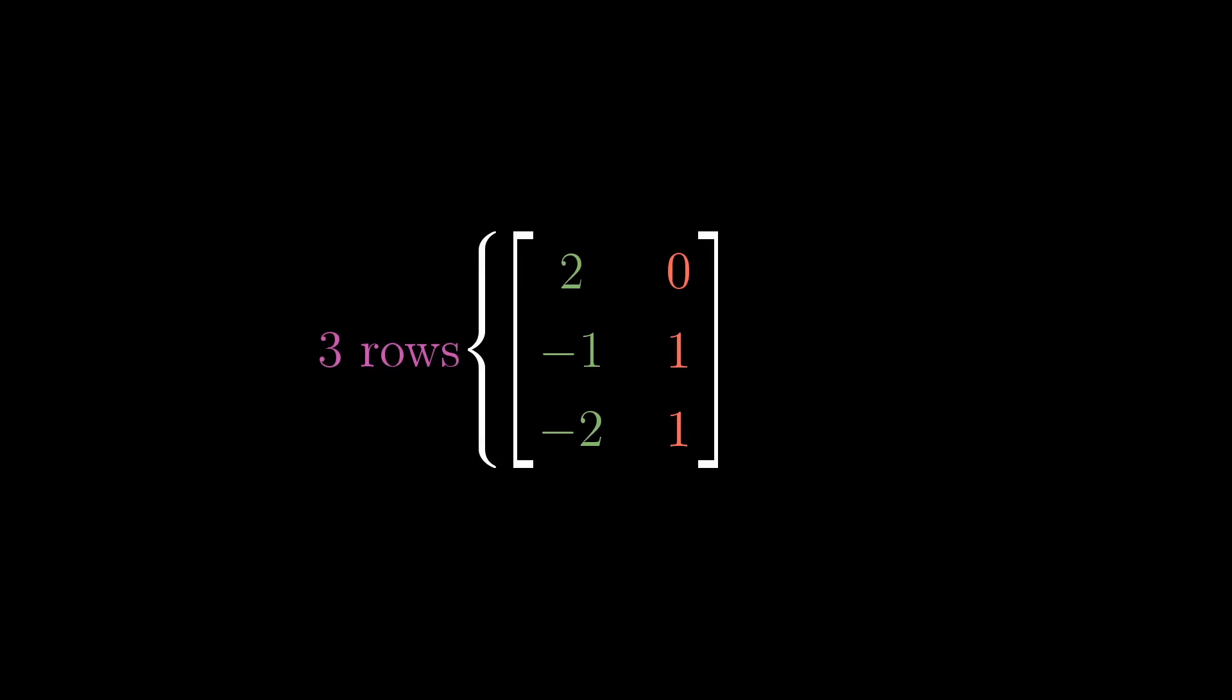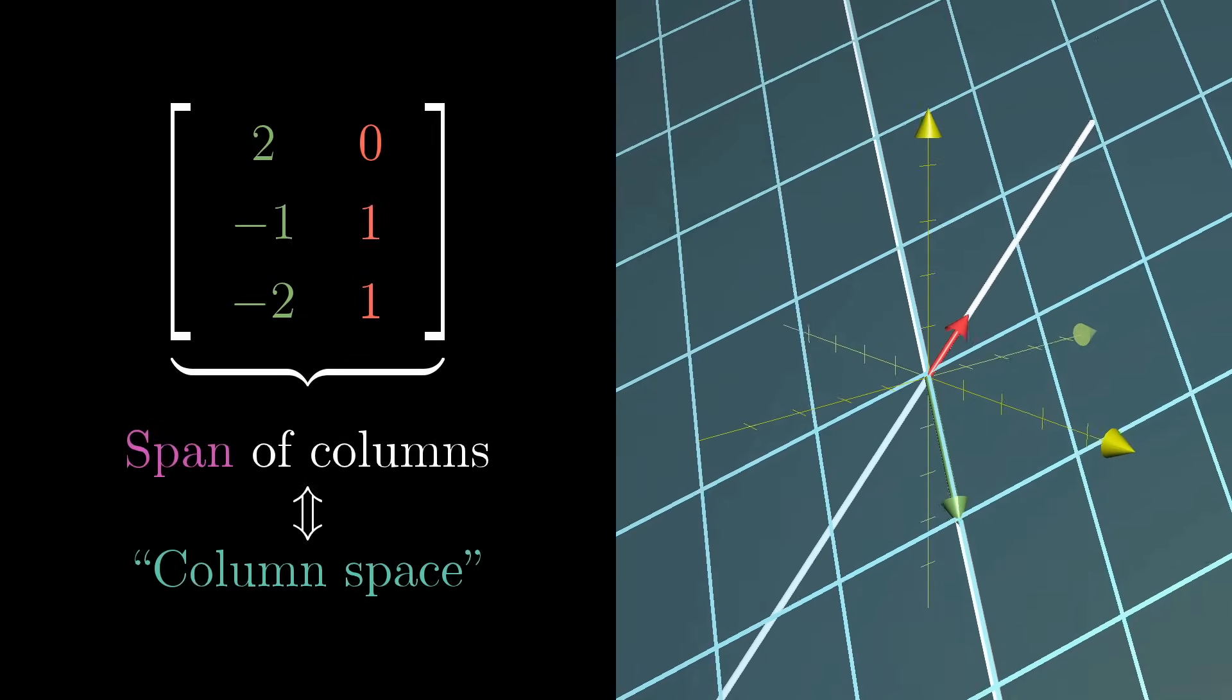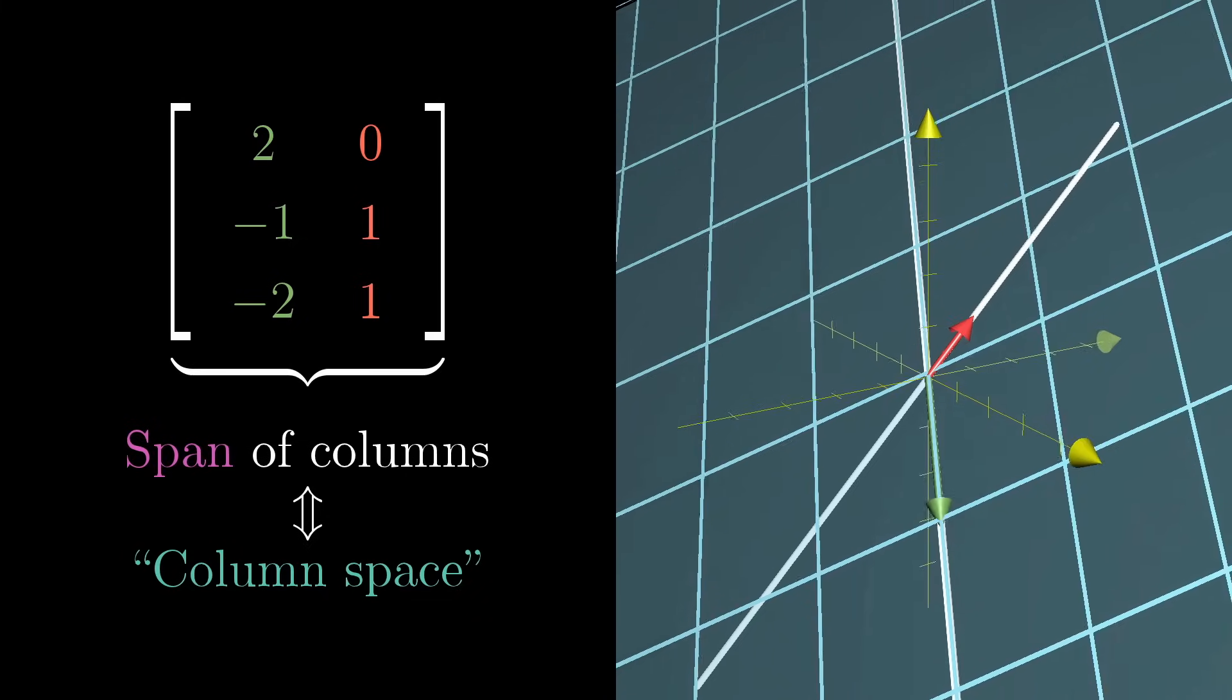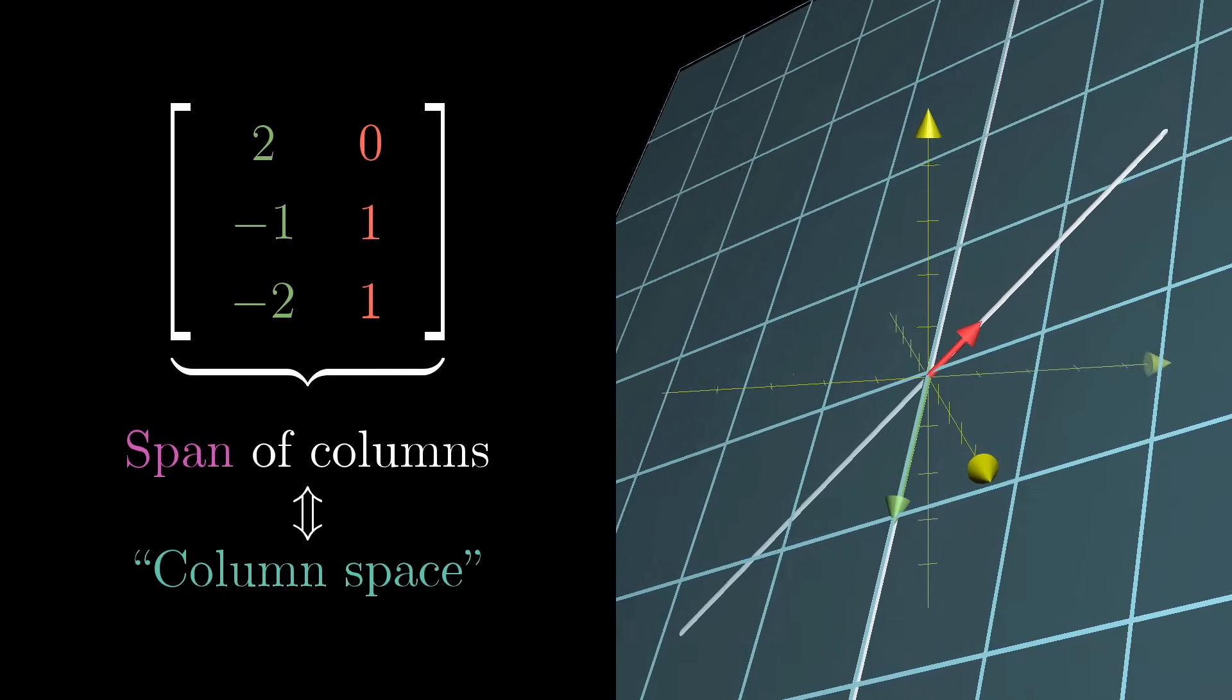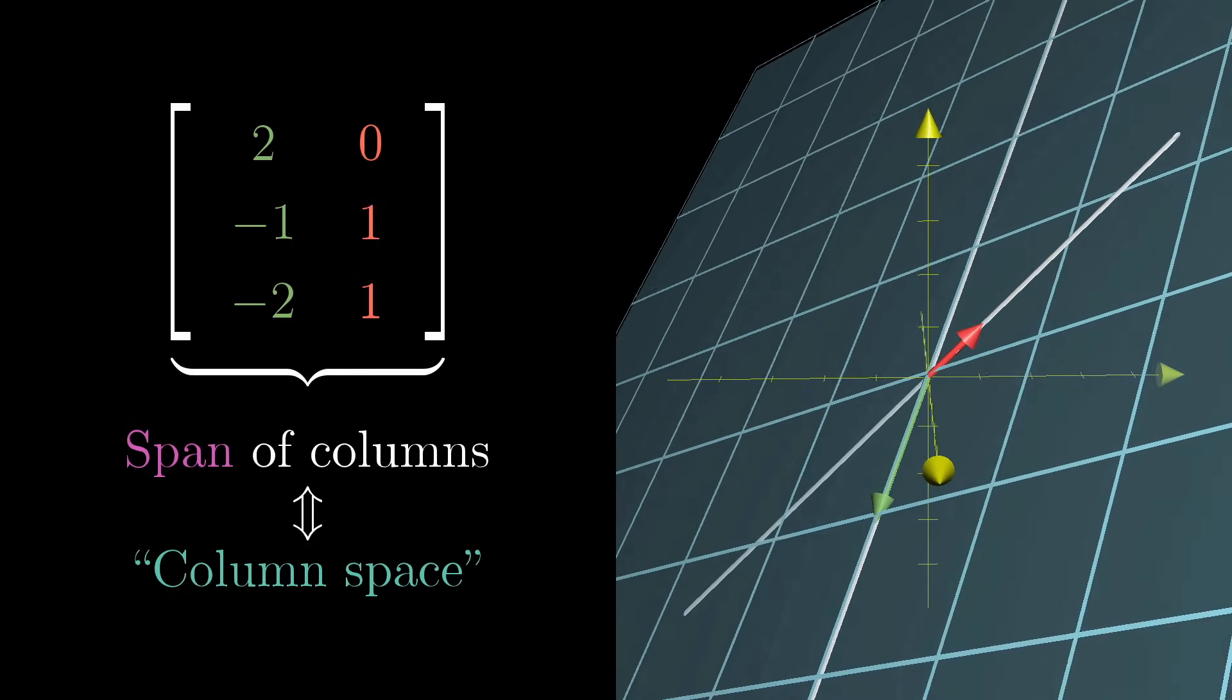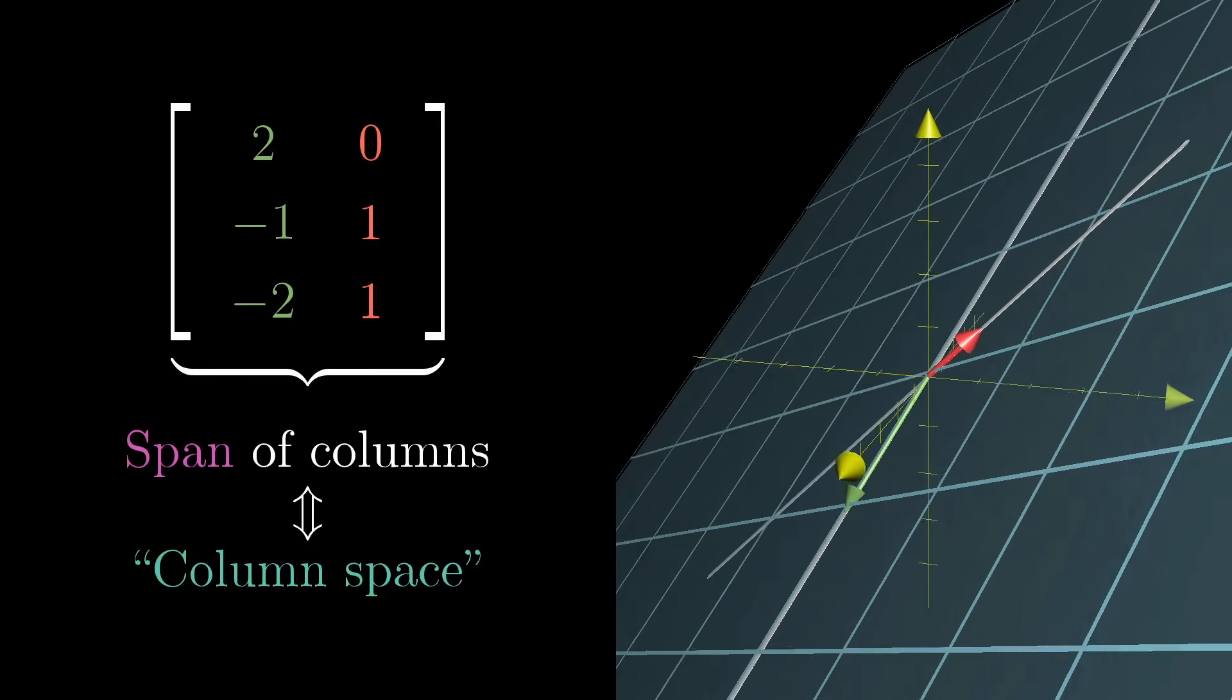this means the matrix encoding our transformation has three rows and two columns, which, to use standard terminology, makes it a 3x2 matrix. In the language of last video, the column space of this matrix, the place where all the vectors land, is a 2D plane slicing through the origin of 3D space. But the matrix is still full rank, since the number of dimensions in this column space is the same as the number of dimensions of the input space.